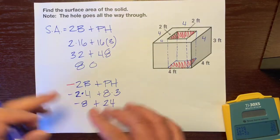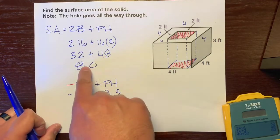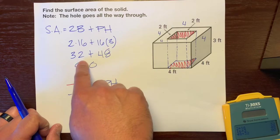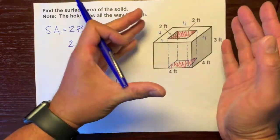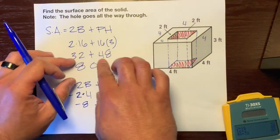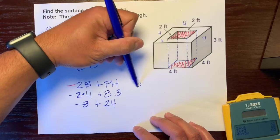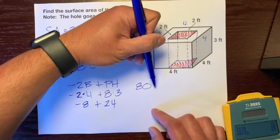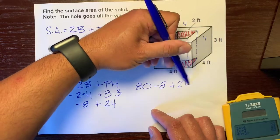I'm not going to combine this yet, just to show you what's going on. We have the surface area of this entire prism without the hole, which is 80, and then we'll write this negative 8 plus 24.